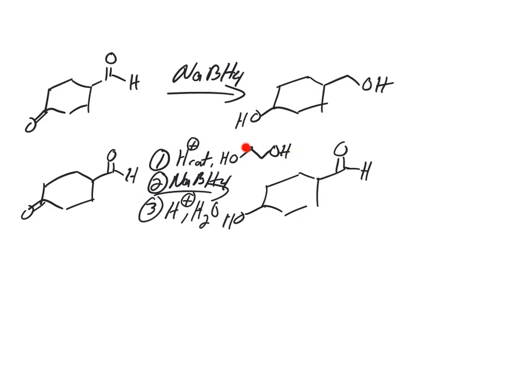We can actually use these acetal protecting groups to mask the aldehyde, do our chemistry on our ketone, and then deprotect and get our aldehyde back. That's called chemoselectivity.